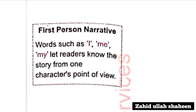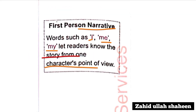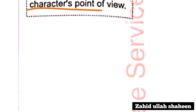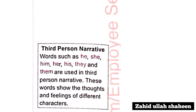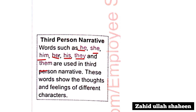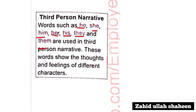First person narration is used with pronouns I, me, my — this lets the reader know the story from one character's point of view. Third person narration uses pronouns he, she, him, her, his, their — these words show the thoughts and feelings of different characters.